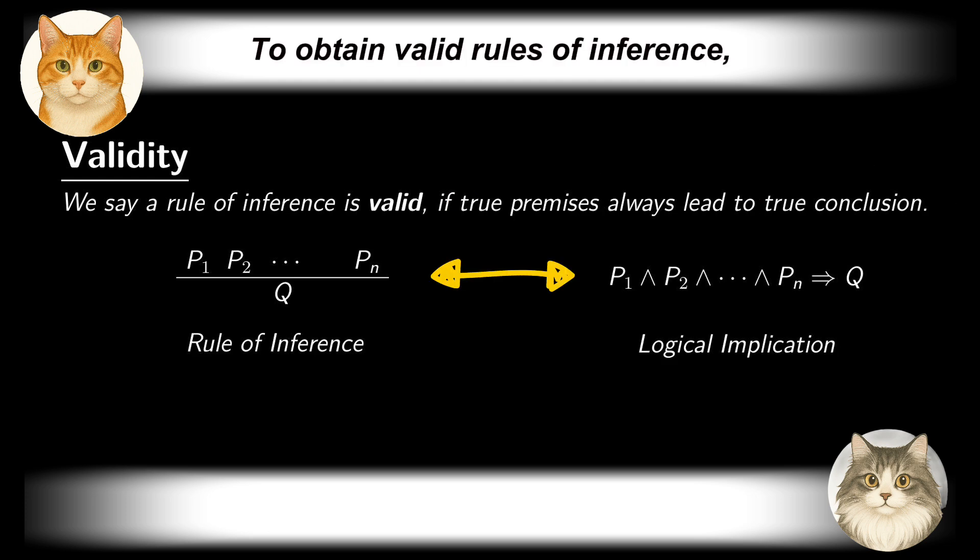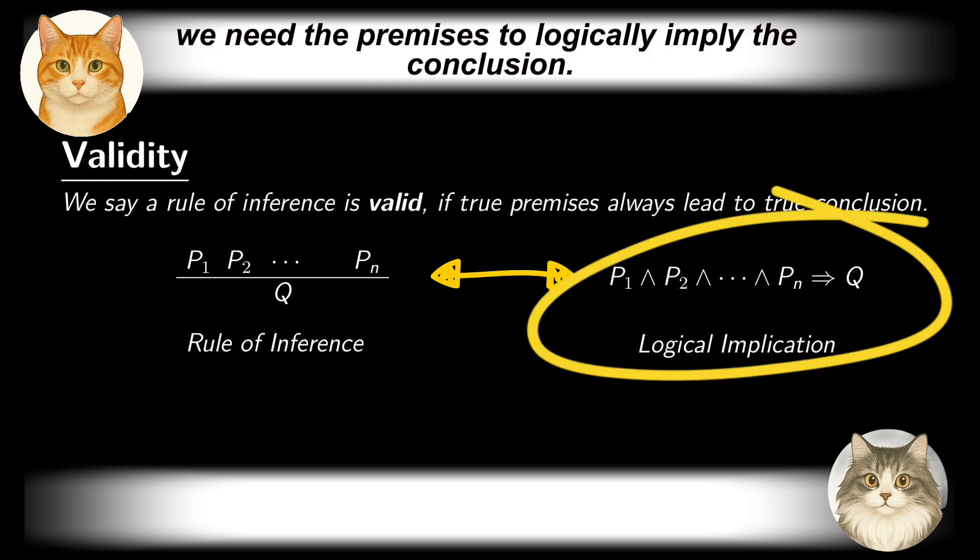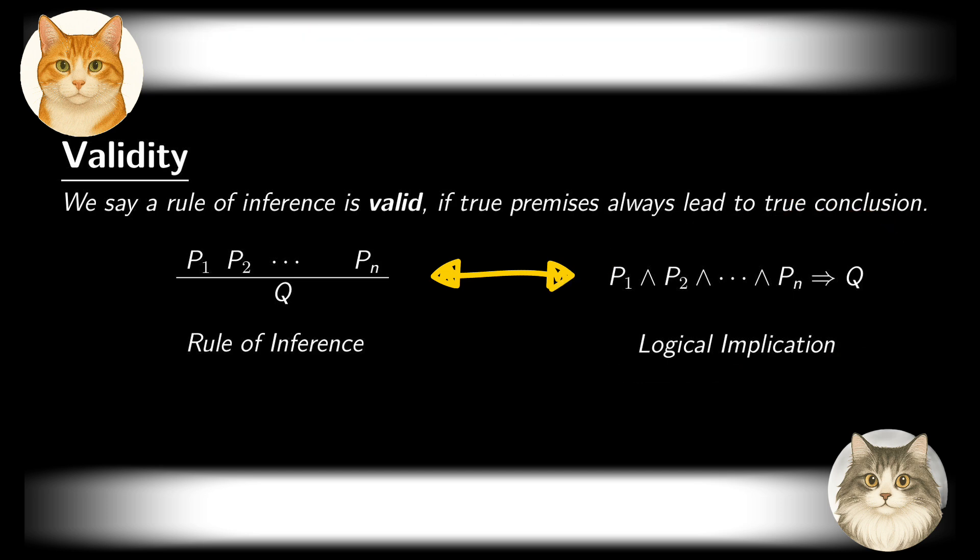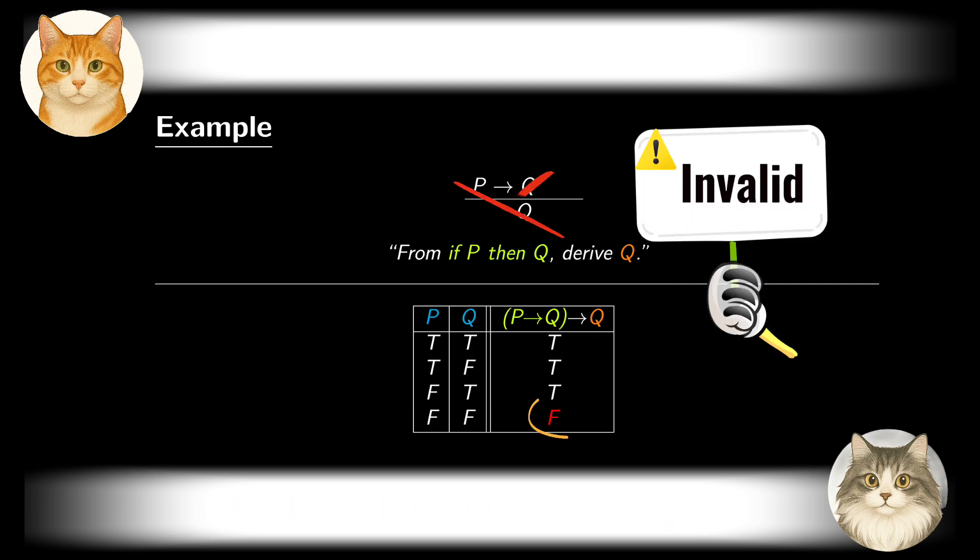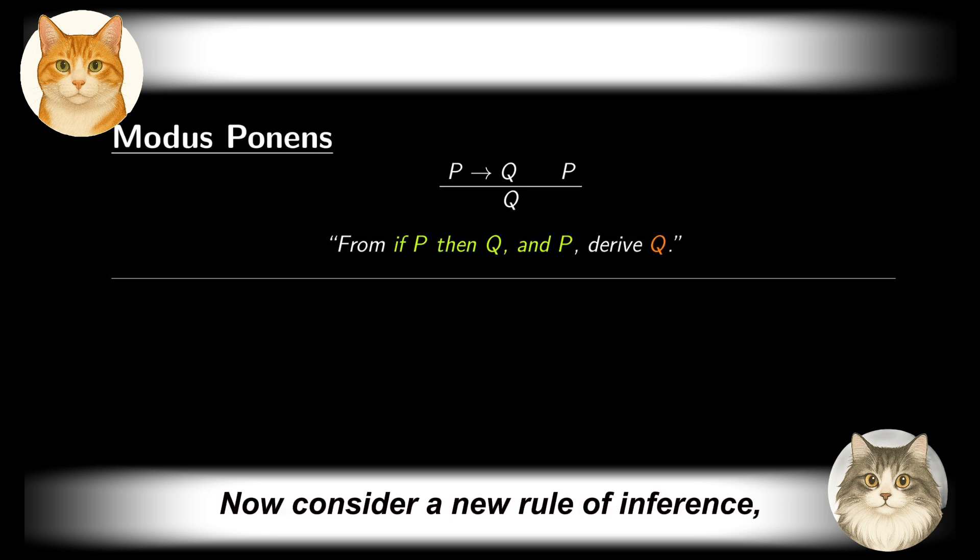To obtain valid rules of inference, we need the premises to logically imply the conclusion. In other words, when we consider a conditional compound proposition whose antecedent consists of the premises and whose consequent is the conclusion, this compound proposition should be a tautology. Let us review the previous example. The rule of inference there corresponds to the following proposition, and the truth table reveals that the proposition is not a tautology. Now consider a new rule of inference, which states: from P and 'if P then Q,' conclude Q.